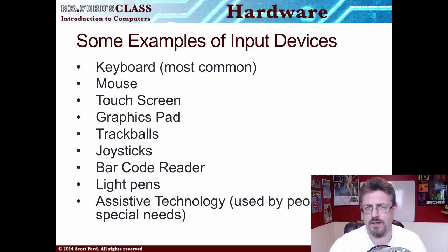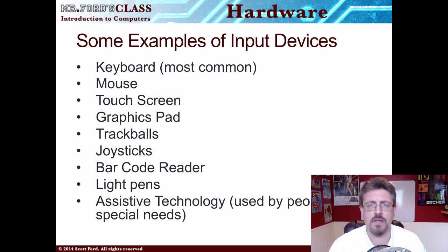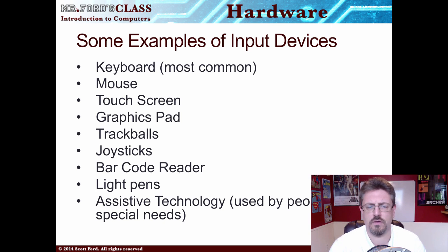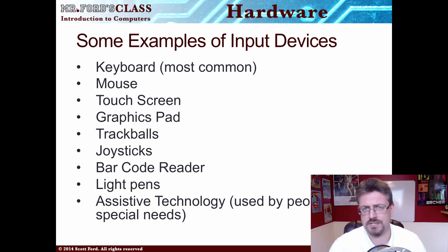Some examples of common input devices are the keyboard — the most common input device we have — the mouse, touch screens, graphics pads, track balls, joysticks, barcode readers, light pens, and assistive technology, which is for people with different physical impairments so they can use the computer.